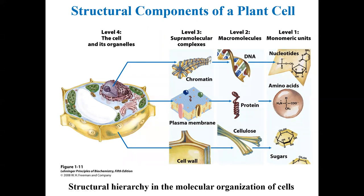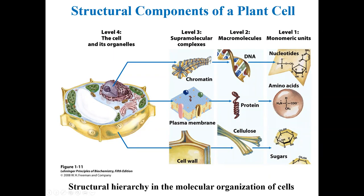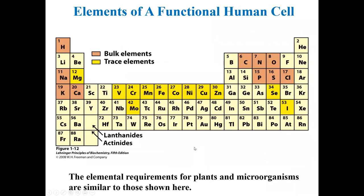At the basic level, it's still chemistry. Components of the cell — like a plant cell — include nucleotides that make DNA, and DNA combined with protein makes chromatin. Proteins are made from amino acids. We have 20 natural amino acids that make all the thousands of proteins in our cells. Sugars can make polymers like cellulose and plasma membrane. Those are the very basic chemical units of the cell.